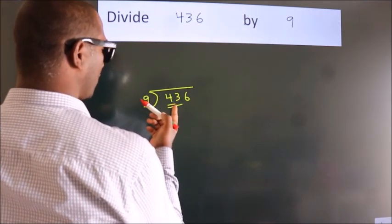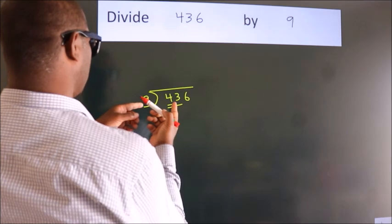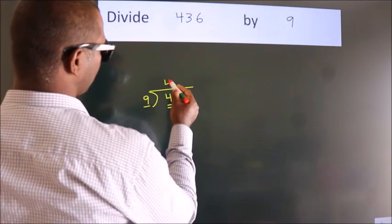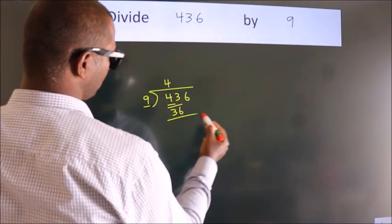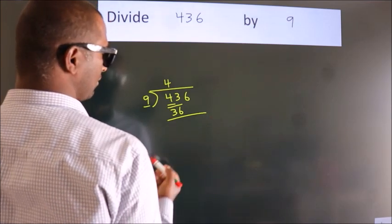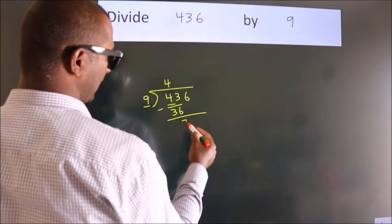A number close to 43 in the 9 table is 9 times 4 equals 36. Now we subtract and get 7.